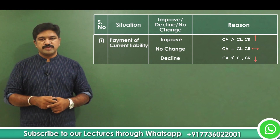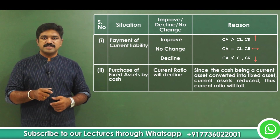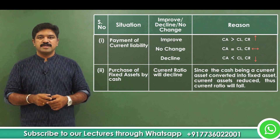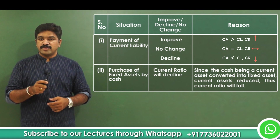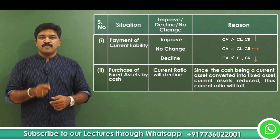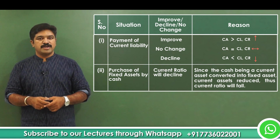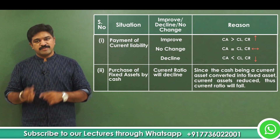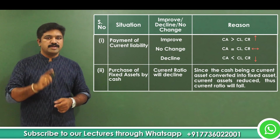Moving on to Case 2: Purchase of fixed assets by cash. Here, current assets are getting reduced without any changes in current liabilities, and because of that reason, we can say the current ratio will decline.